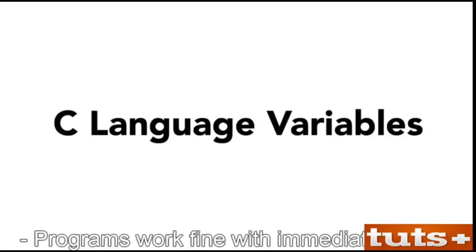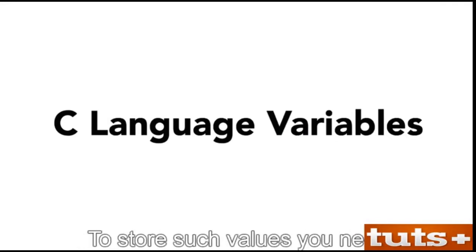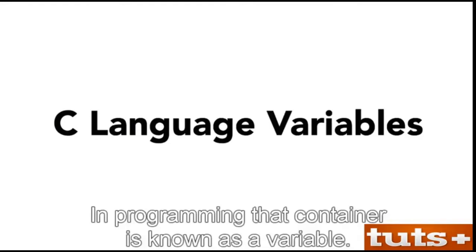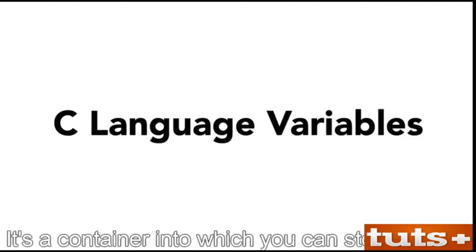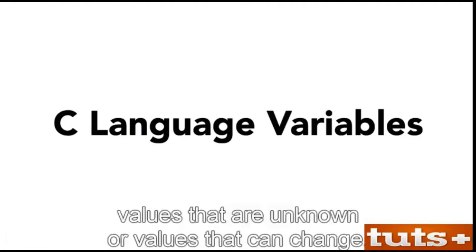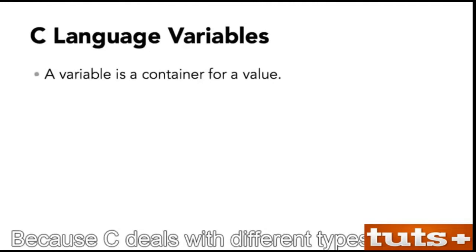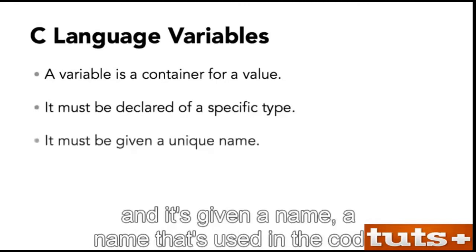Programs work fine with immediate values, but oftentimes you don't know what a value is. Say the value comes from input — a user types it, or it's read from a file or the internet. To store such values, you need a specific container. In programming, that container is known as a variable. In this movie, I introduce you to the concept of the variable — a container into which you can store values that are unknown or can change. You'll see how to declare a variable in the C language and how the variable is used in the code.